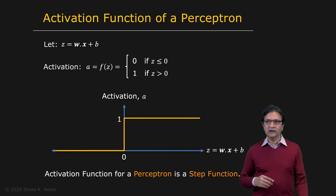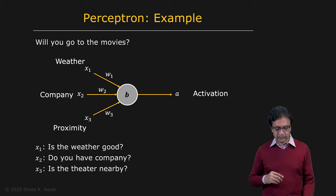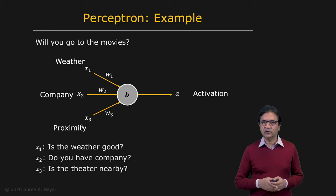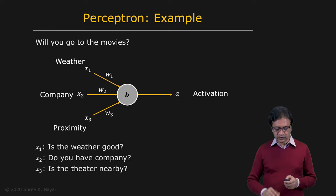Now let's take a look at what you can do with a single perceptron. This is a very simple example. Let's say you wanted to make the following decision: will you go to the movies? And you want to make this decision based on three factors: the weather, whether you have company or not, and how close the theater is, proximity. So you have weather, company, and proximity. Now you can build a perceptron to do this.